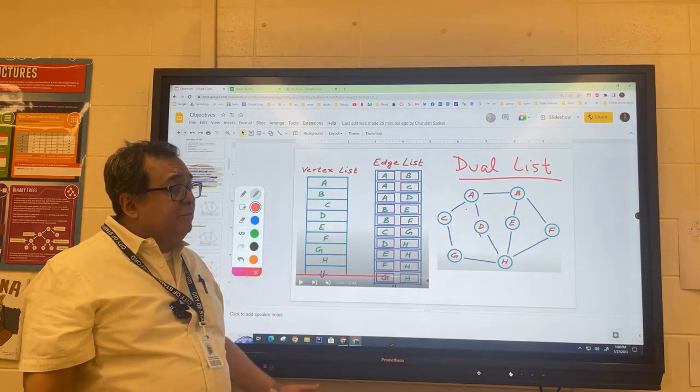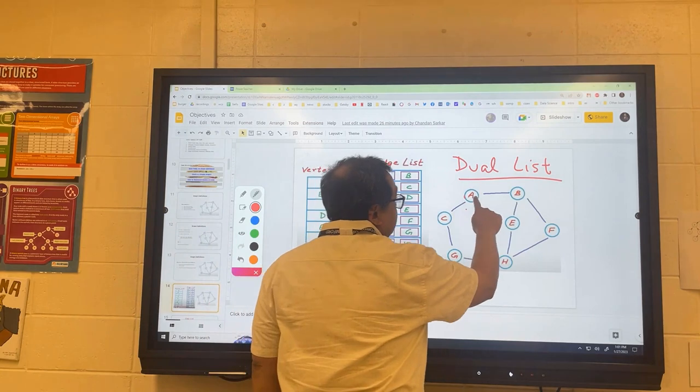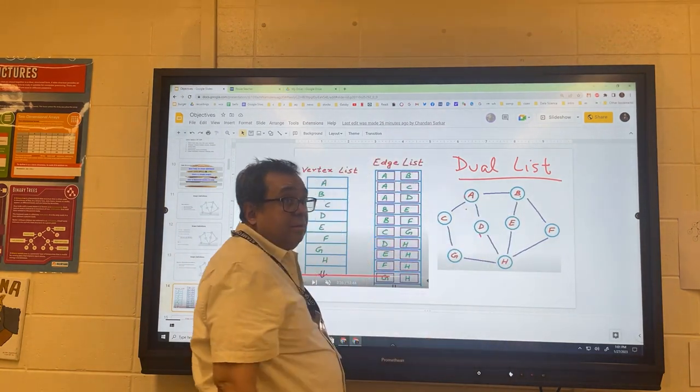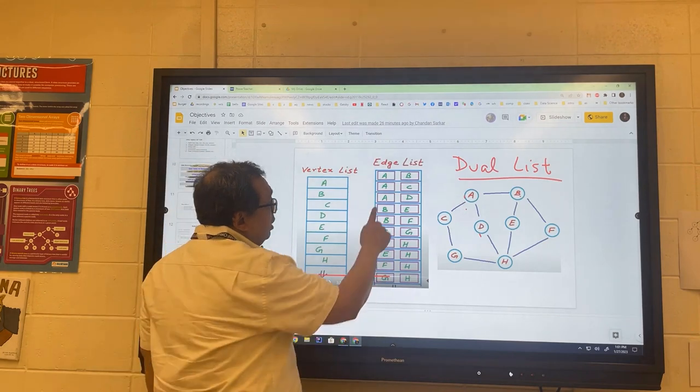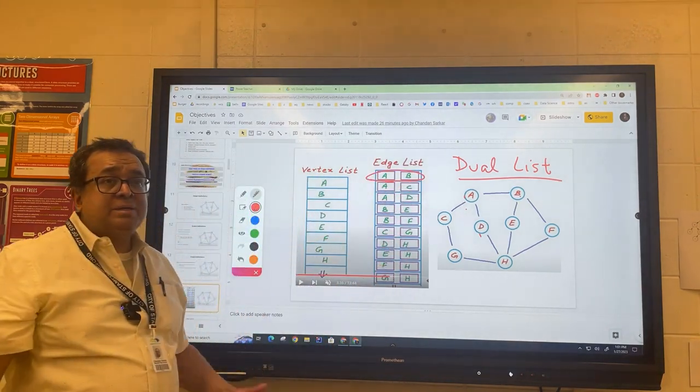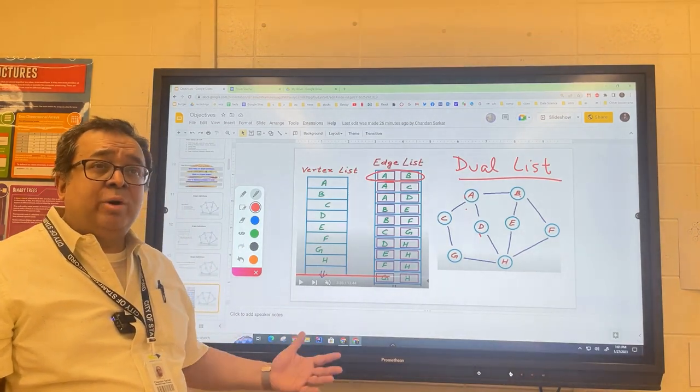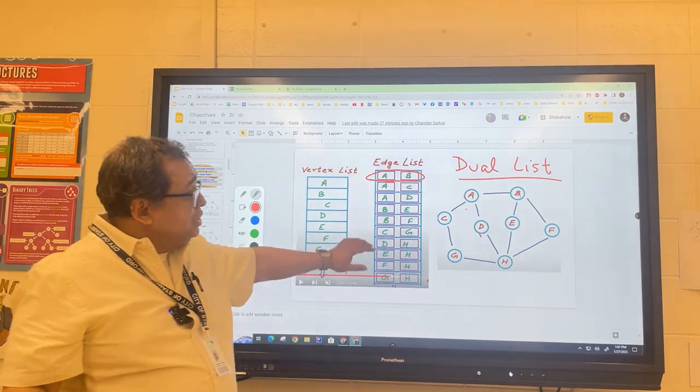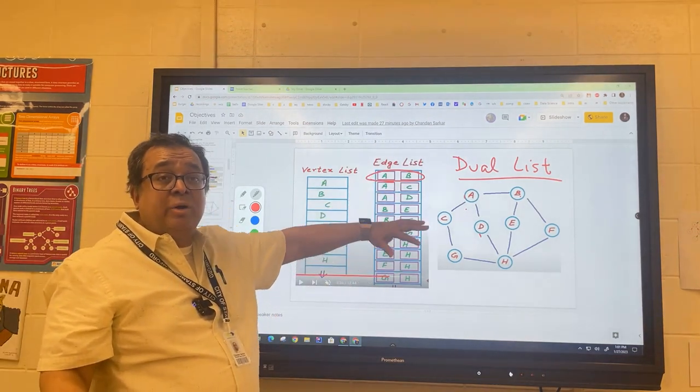Now this graph is undirected. That means that if I have an edge from A to B, then I also have an edge from B to A. Notice that if I store one of those edges here, I don't store the other edge because that would just take up an unnecessary amount of memory. There's no point in it. I know that the graph is undirected.